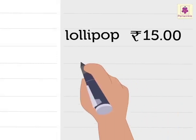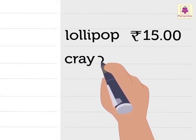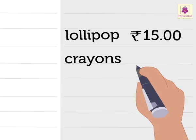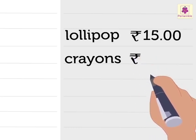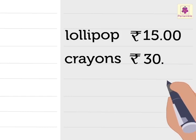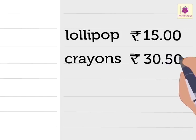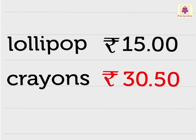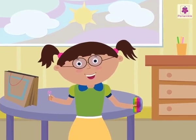Now, Saira is writing the money spent on crayons. First, she writes the symbol of rupee. Then the number 30. Then a dot. And lastly, she writes the number 50. We read this as 30 rupees 50 paisa.